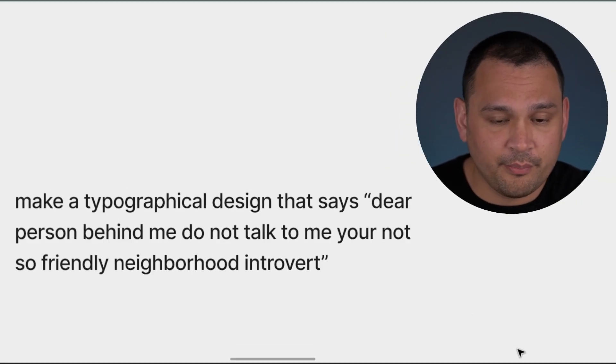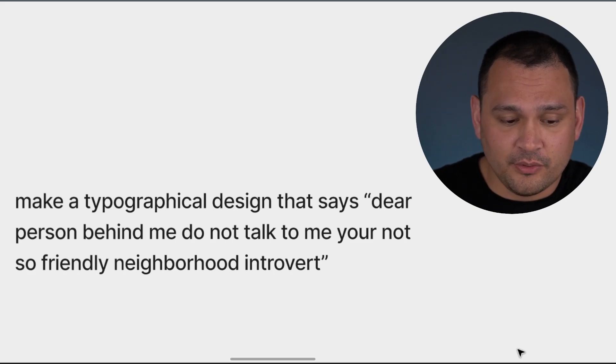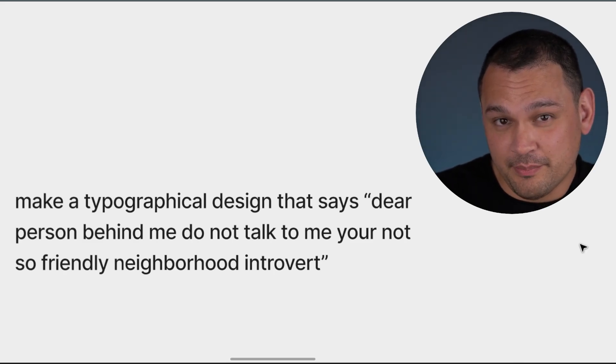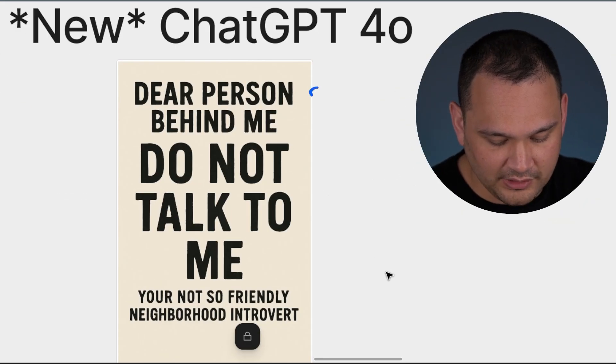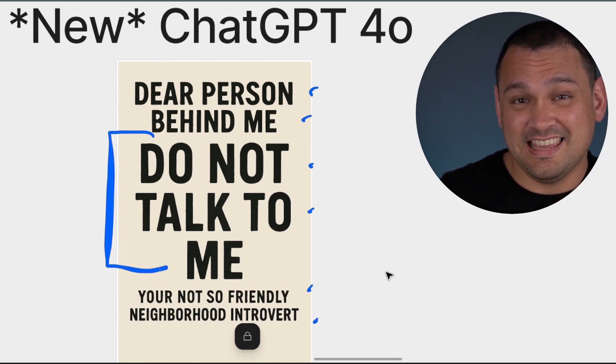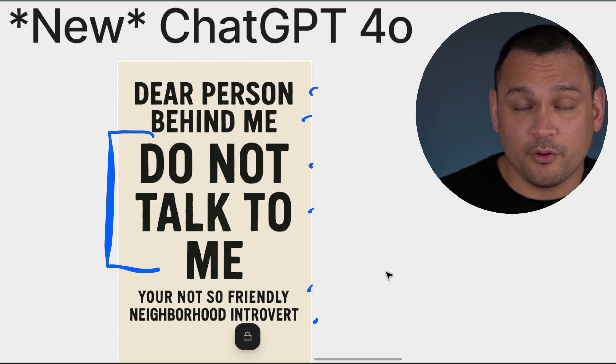Let's see what happens when we shorten it up but keep the context clues by making it a real cohesive design — not just a dump of words. Here we are with our modified prompt. We reduced the number of words drastically and kept the phrase context clues. It says: 'Dear person behind me, do not talk to me. You're not so friendly neighborhood introvert.' Let's see what ChatGPT made of that shorter prompt. Everything looks correct. It even made the decision to emphasize 'do not talk to me' by making it bigger, which is great for a t-shirt design. Pretty pleased with that as an initial output from a super basic prompt.